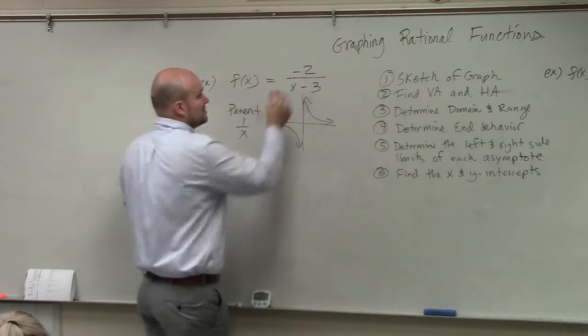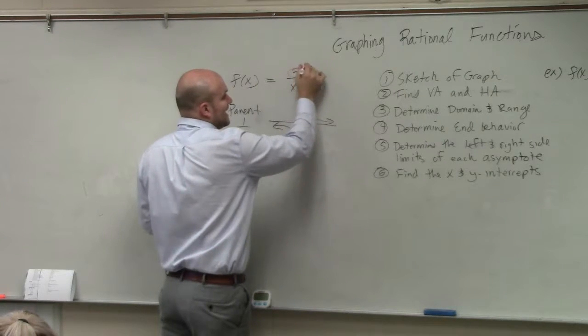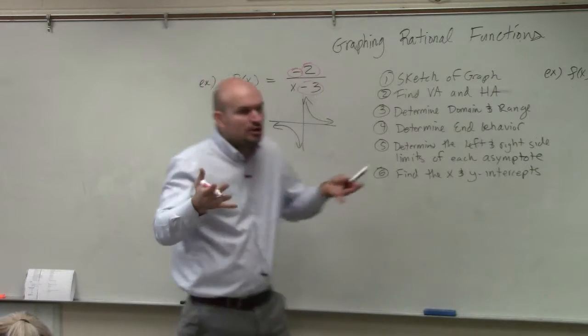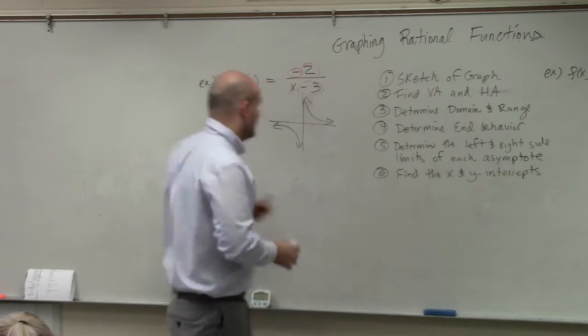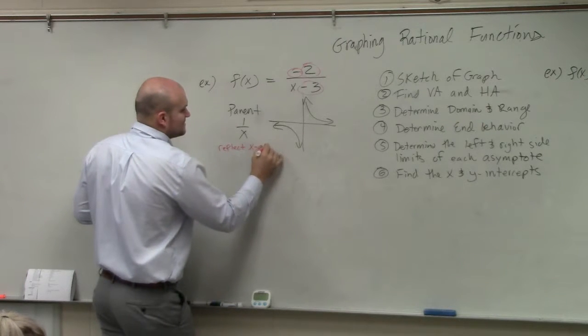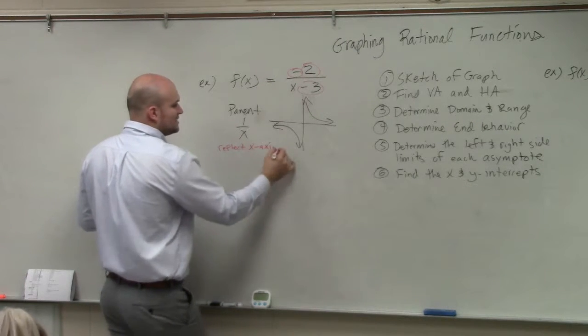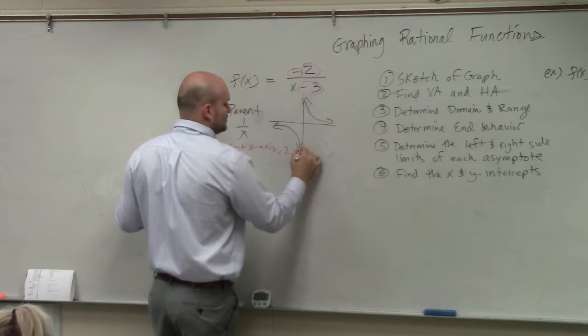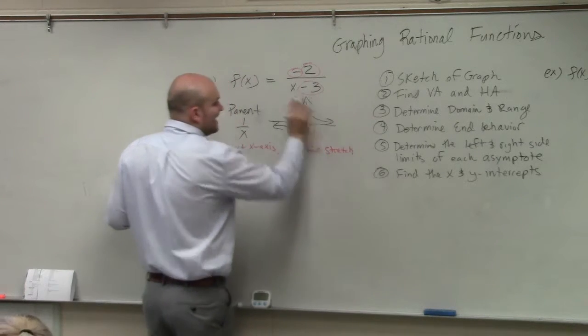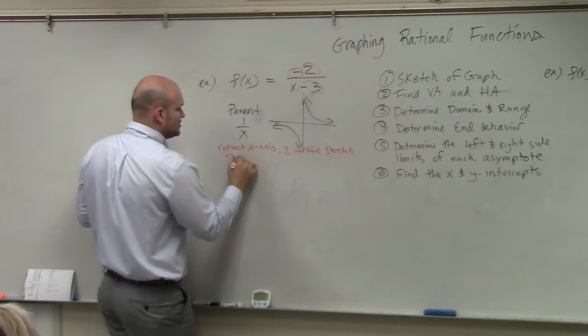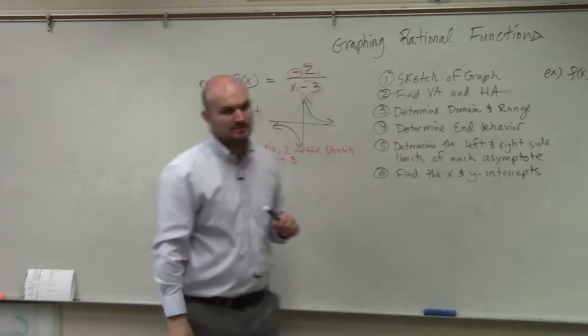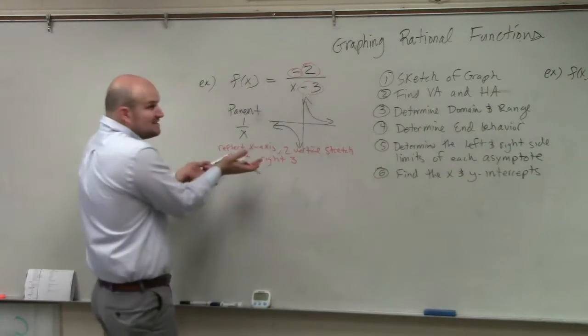So we see there's a couple changes. We have a negative, a negative 2, and a minus 3. What do all of those things do to our graph? Well, the negative is reflecting over the x-axis. 2 is going to be a vertical stretch. And this minus 3 is a shifting right 3. So we got all these things going on.